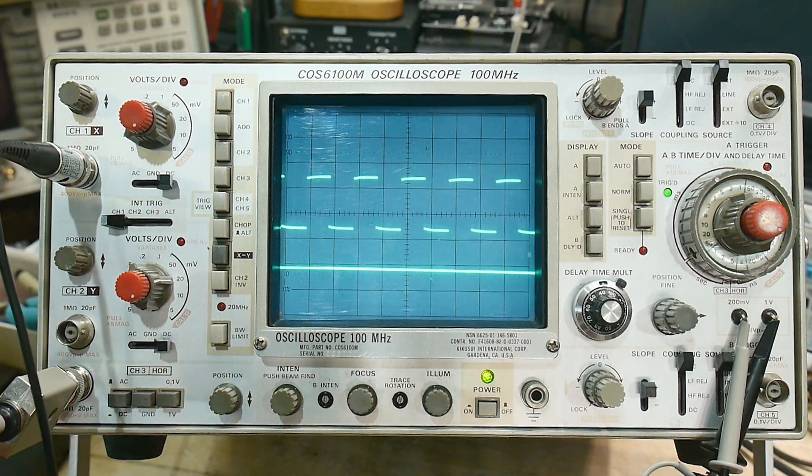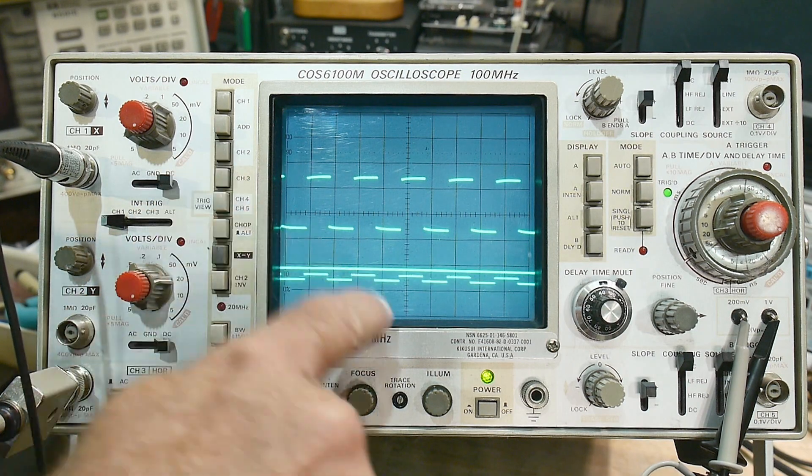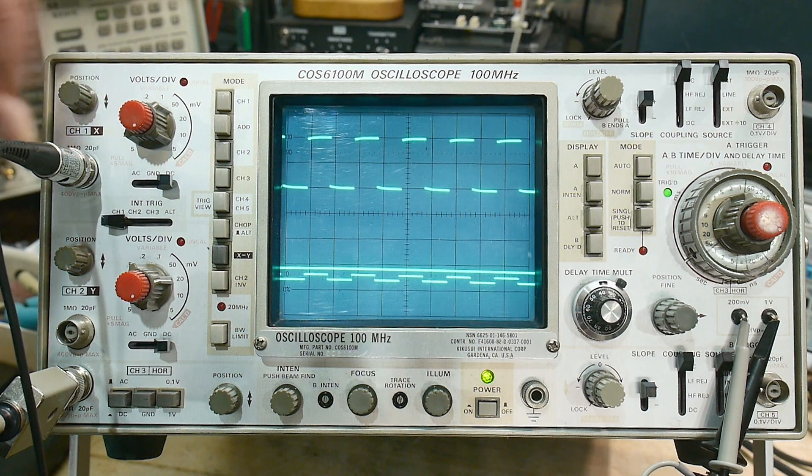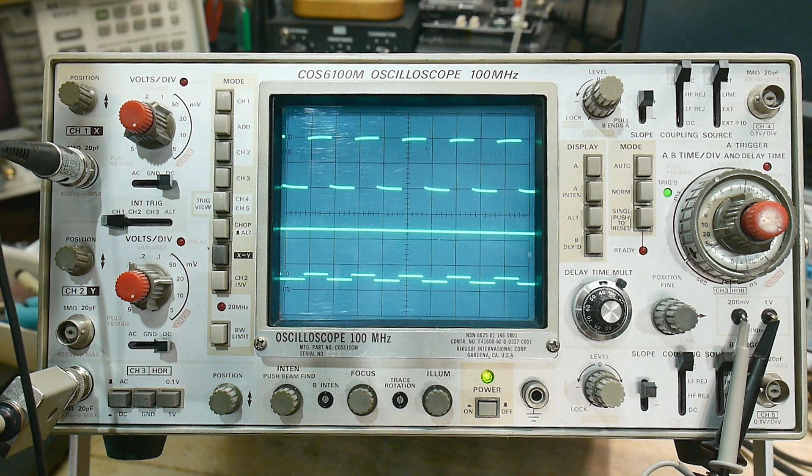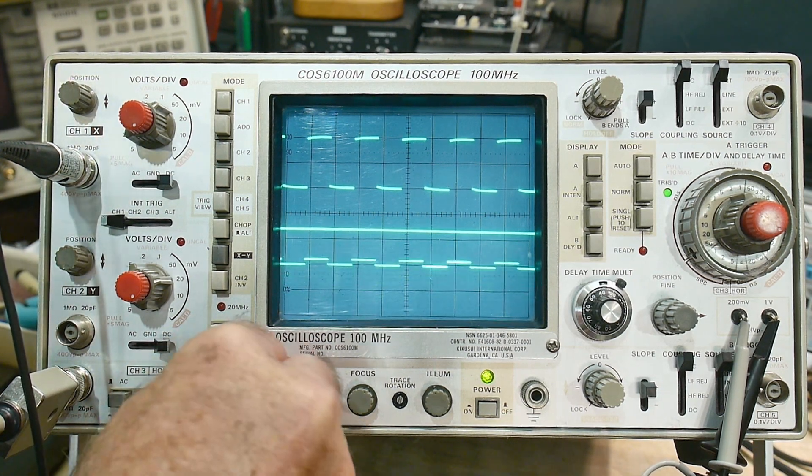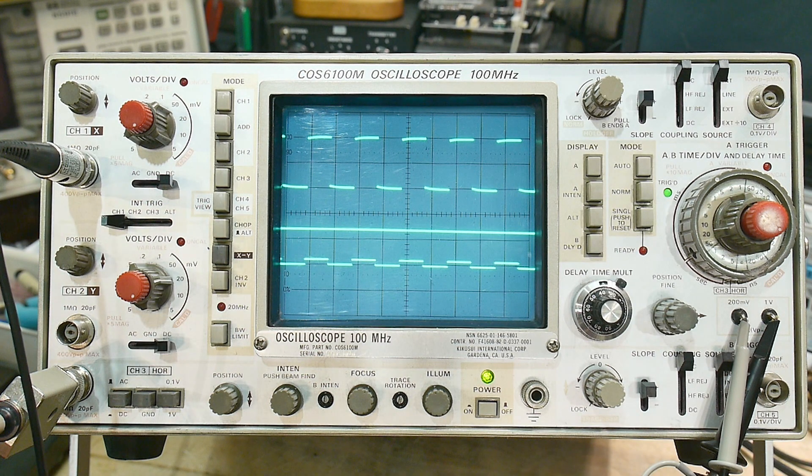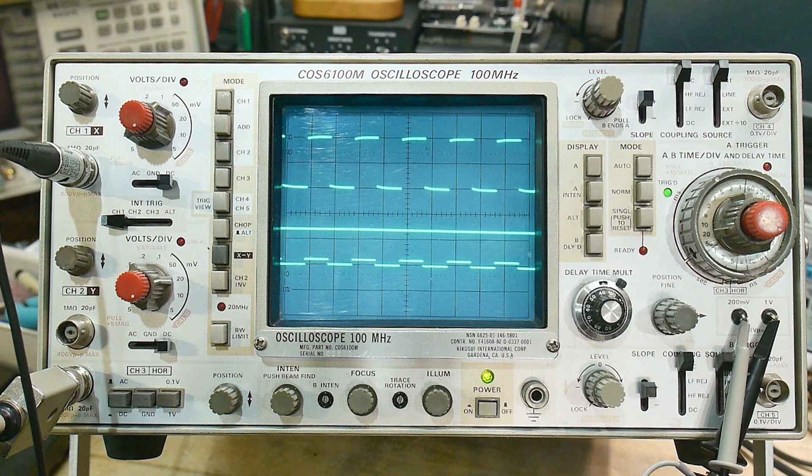So channel three's down here, and we can turn on channel three. So there's the third channel, now we've got a three channel scope. I've got channel one, I've got channel two, now I've got channel three. And then the other thing we can do is we can say, what type of triggering are we using?